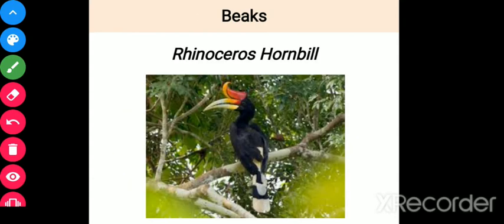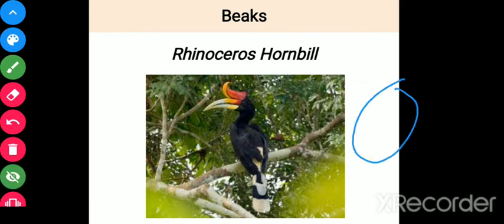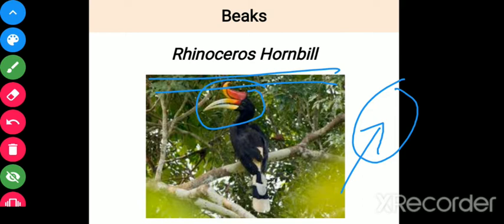Looking at beaks: many birds have large beaks for specific purposes. The macaw bird has a large beak to crack open large nuts and fruits, using it to reach the sweet pulpy fruit inside. Another example is the rhinoceros hornbill, which has a very special beak structure — it uses the tip of its bill like a finger to pluck fruits from trees. These are adaptations according to their environment and food habits.